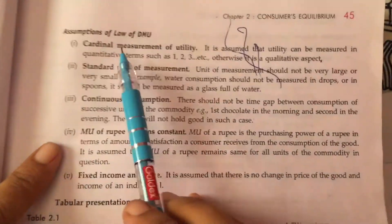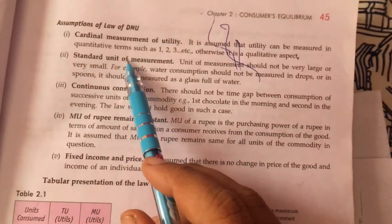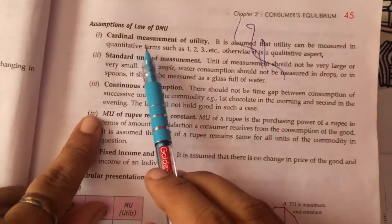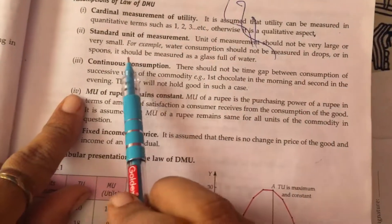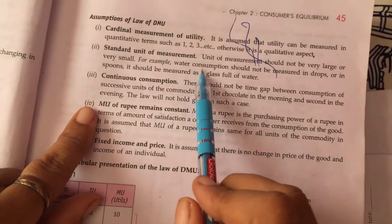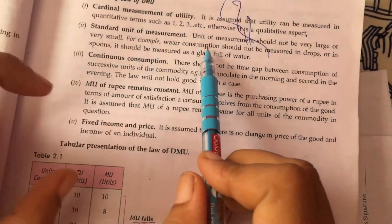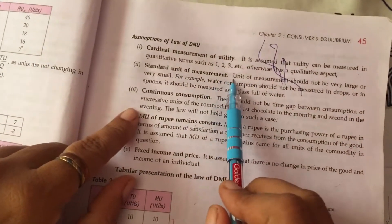Then comes your assumptions. Children, in this law, there are some assumptions. These assumptions are based on the law. The first assumption is that this is a cardinal measurement of utility. This is the measurement in terms of quantity. When you count the utility in terms of units, it is called cardinal measurement.